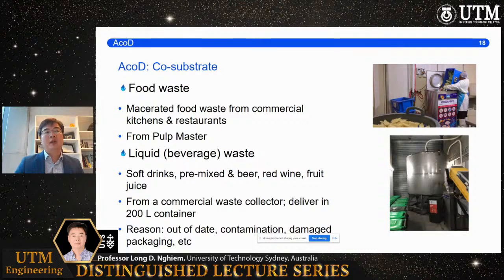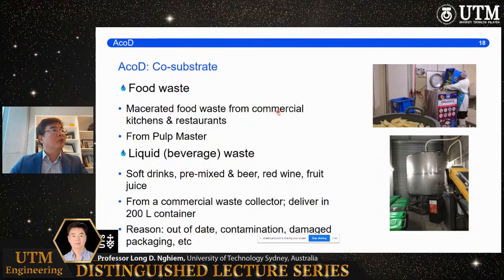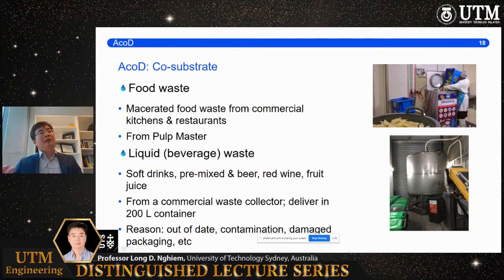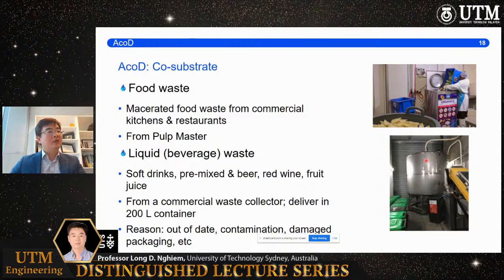This is food waste from commercial kitchens and restaurants — not from individual households — so the quality of material is more consistent. The food waste runs through a macerator installed on site: whenever the chef has food waste, they put it into the macerator, add a tiny bit of water, close the lid, and the macerator grinds the material into a paste with very high organic content. It is stored in a stainless steel vessel and a truck comes every three days to take it to the treatment plant for co-digestion.